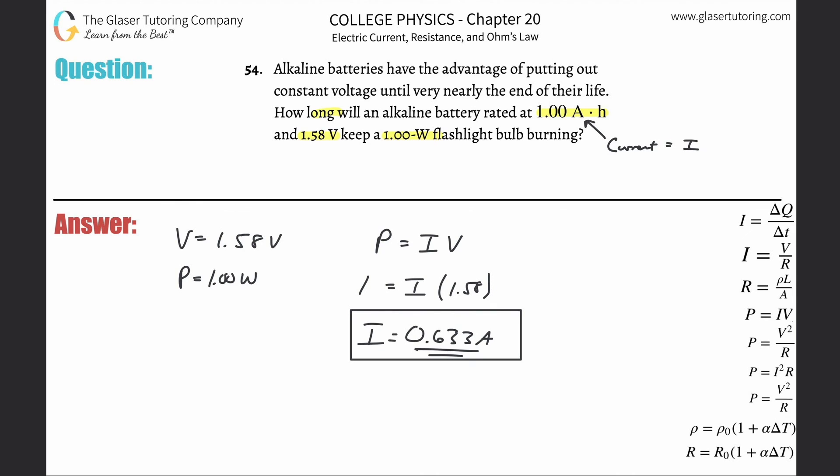So I'll ask you, how many hours can the flashlight burn now? If the battery has the ability to produce one amp for a full hour and we know that the current that's actually being drawn by the flashlight is a fraction, about two thirds, of the overall current that's able to be supplied for an hour.